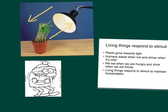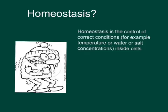Living things respond to stimuli in order to maintain something called homeostasis. Homeostasis can be defined as the control of the correct conditions — the life-sustaining conditions — inside cells. These conditions could be correct temperature, water, or salt concentration. For example, cells may detect that the salt concentration inside the cell is too high, and they would respond to that stimulus by doing something to adjust that concentration to a level that can sustain life. This control of the correct conditions inside cells is called homeostasis, and it is a characteristic of living things and part of the response to stimuli.